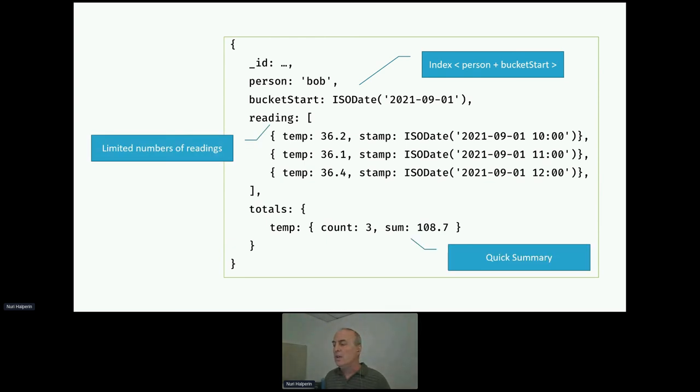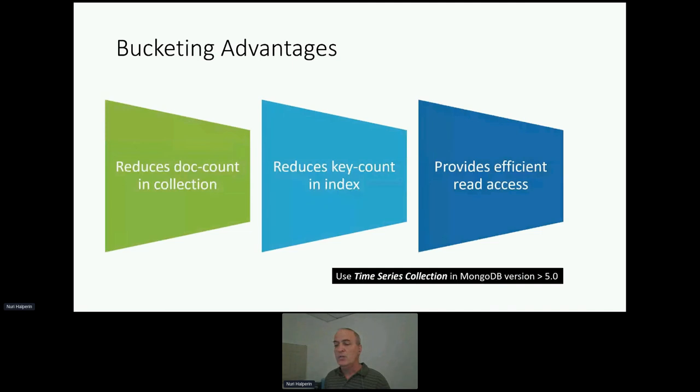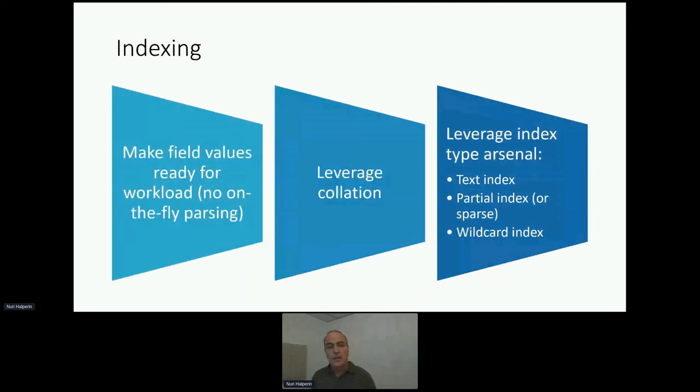So this is it for bucketing demonstration. The bucketing advantage is reduces document counts, index, and so forth, as I mentioned. And finally, indexing. We want to index our workloads. We want to inspect our fields, make sure they are of the right data type. Therefore, I'm going to be able to use more concise and better indexes for this data type.